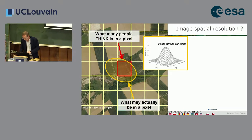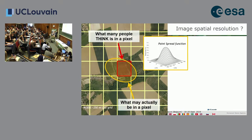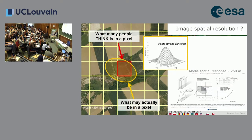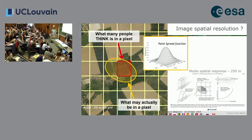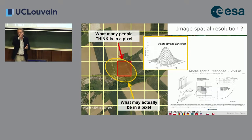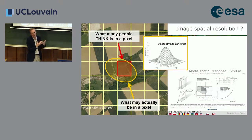MODIS 250-meter time series is a wonderful dataset, but the 250 meters is something that does not really exist. 250 meters is the nadir view of the MODIS pixel directly below the satellite; as soon as you go along-track, it can be one kilometer. When you mosaic for compositing, you are compositing pixels of one kilometer with pixels of 250 meters, so you cannot claim a composite of 250 meters because the signal is completely diluted.